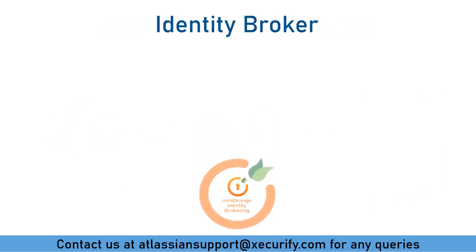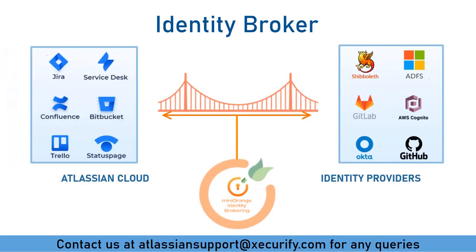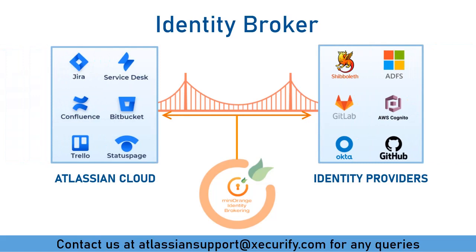Identity brokering is a way to establish trust between parties who want to use online identities of one another. It provides a centralized way to manage identities across multiple security domains. Minirange also provides cross-protocol brokering, which lets you configure identity providers and service providers with different protocols.